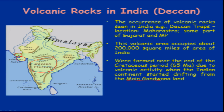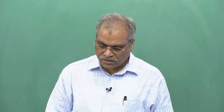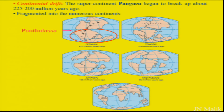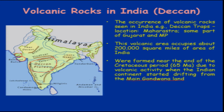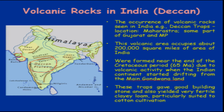The main Gondwana land was the original land mass from which India drifted. When it started drifting, it experienced volcanic activity during that period — almost 65 million years back — and this is what we call the traps. These traps gave a good building stone and also provided very fertile clay loam particularly suited for cotton cultivation in this region.